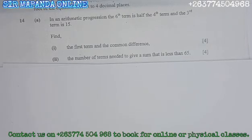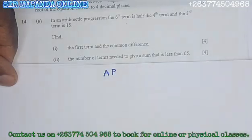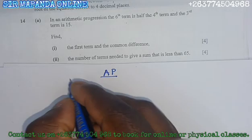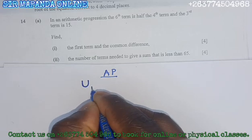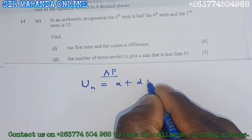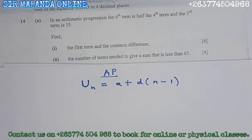Saying this is an AP, or arithmetic progression, you need to understand the formulas used in an AP to find the nth term. So the nth term, which I'm going to denote as U_n, is found by the formula: A plus D open bracket n minus 1. This is the formula for the nth term of the arithmetic progression.